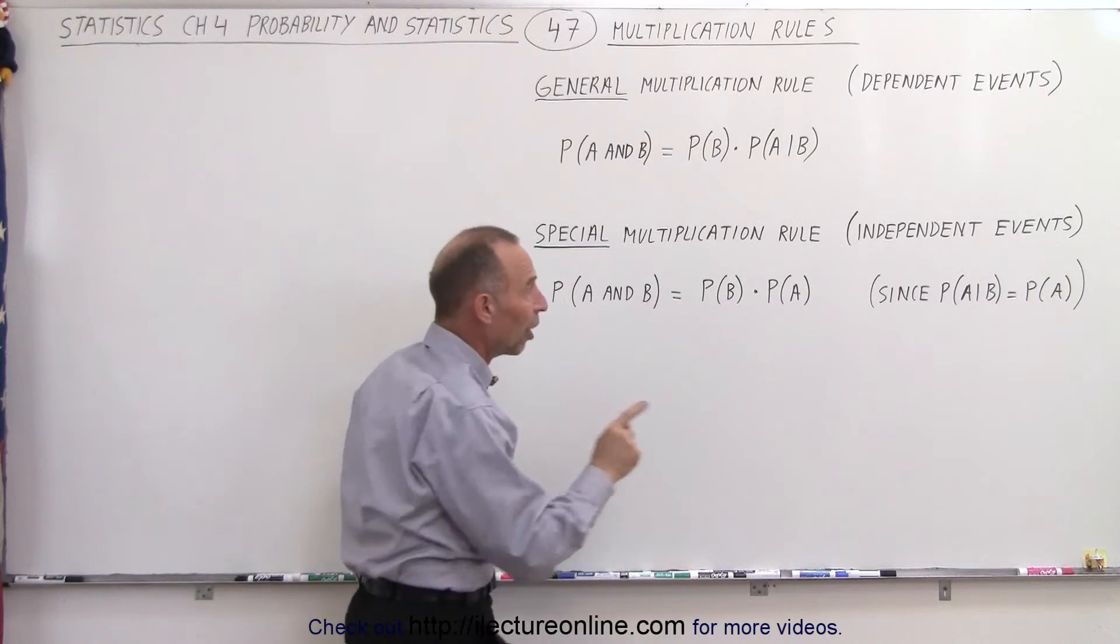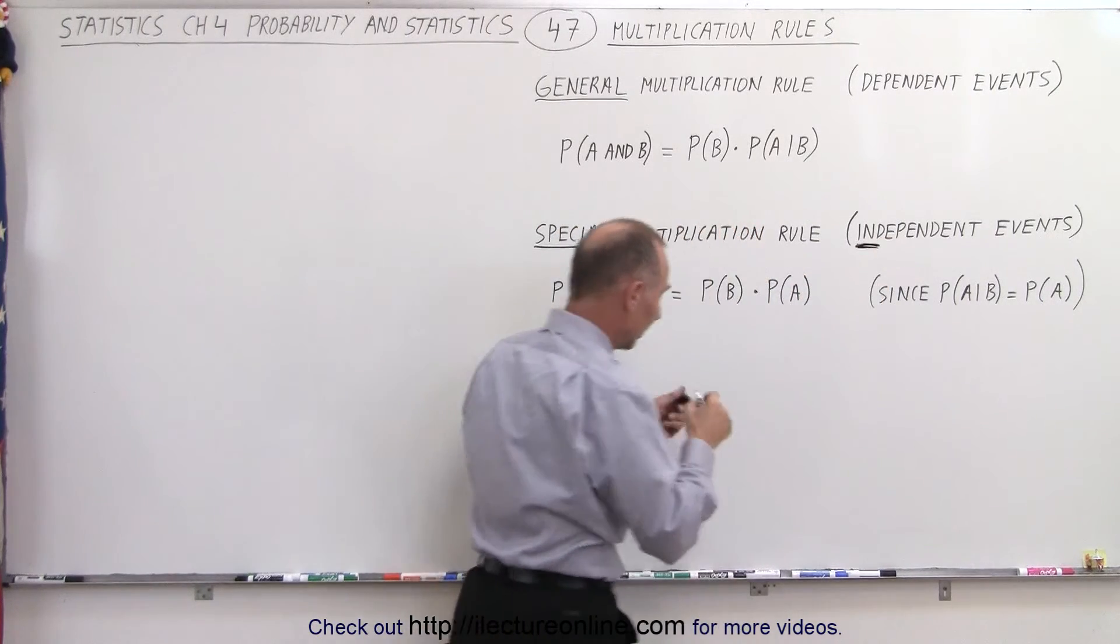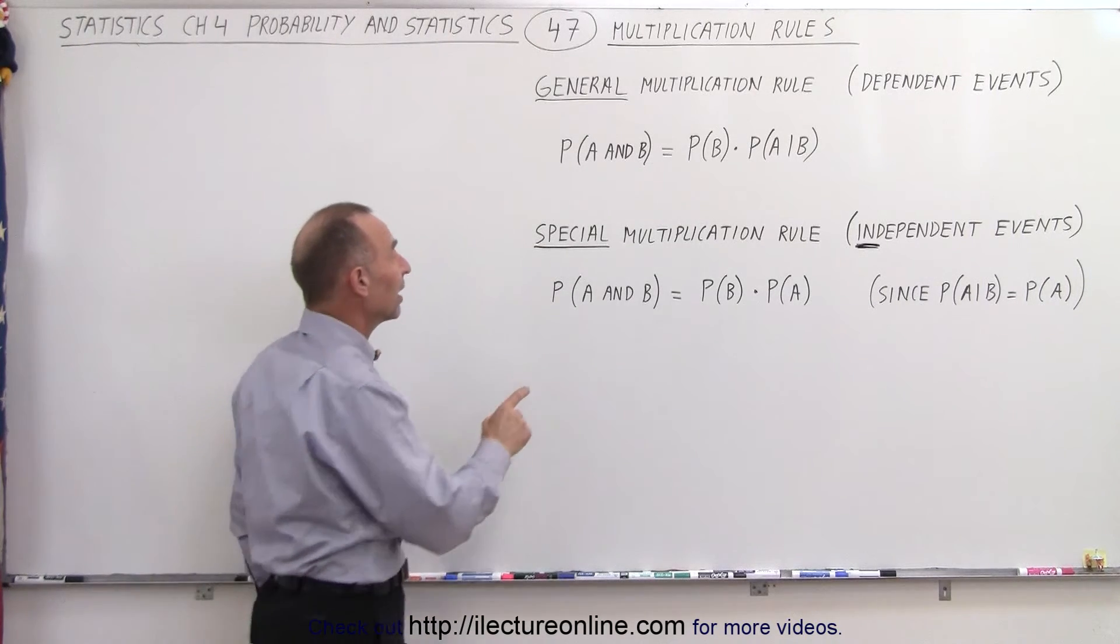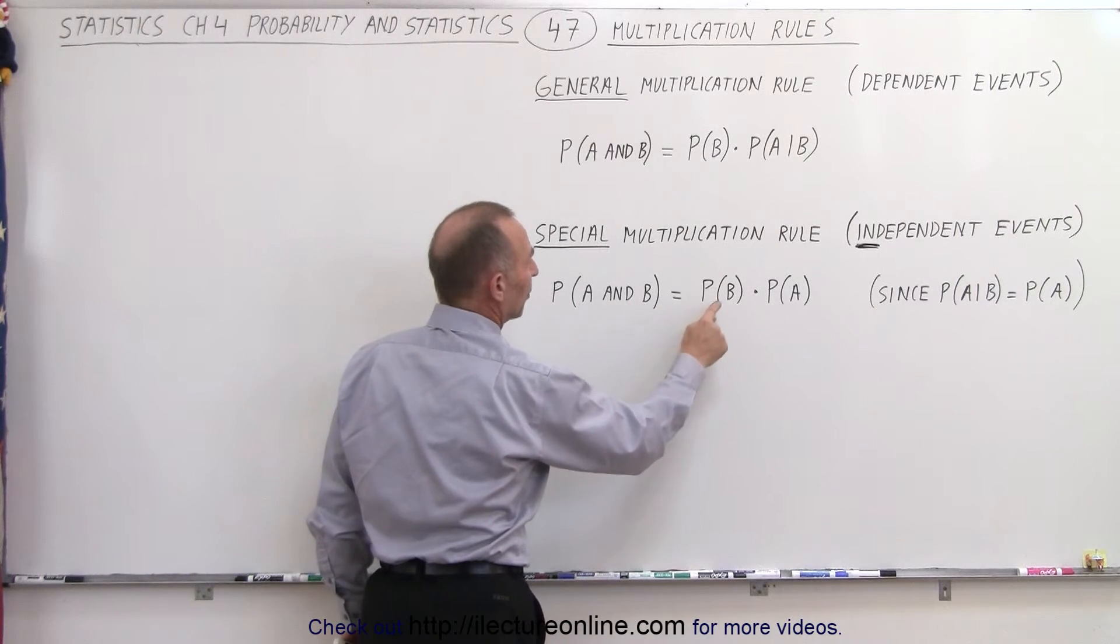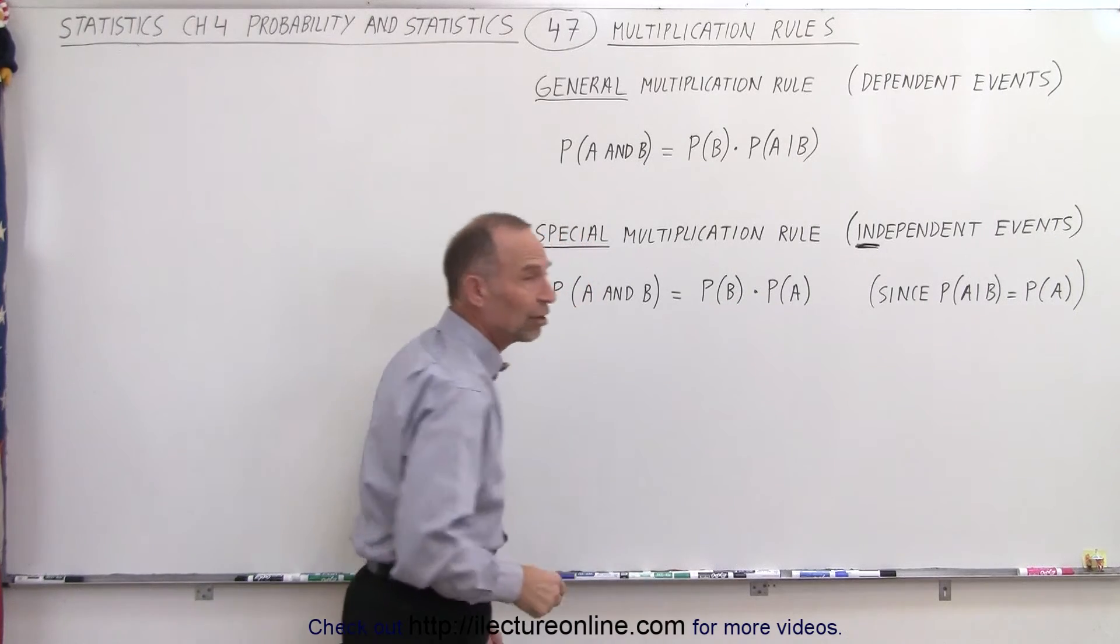But if the events are independent, then the outcome of one does not depend on the outcome of the other. We can say that the probability of A and B is simply the product of the probability of B times the probability of A. Of course, we can interchange the order of those.